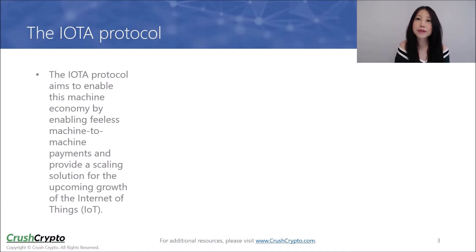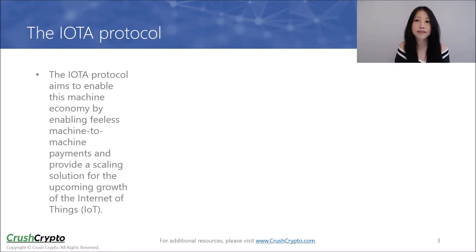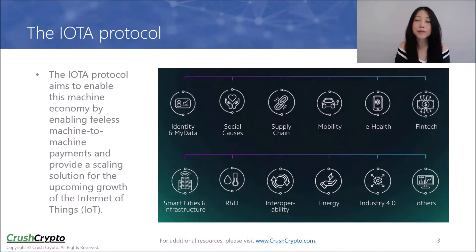The IOTA protocol aims to enable this machine economy by enabling fee-less machine-to-machine payments and providing a scaling solution for the upcoming growth of the Internet of Things. The Internet of Things is defined as the interconnection via the Internet of computing devices embedded in everyday objects, enabling them to send and receive data. This diagram shows some of the areas where IOTA will have dedicated working groups where experts will be working with companies and research institutions within their relevant sectors.